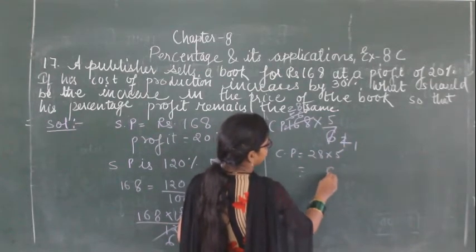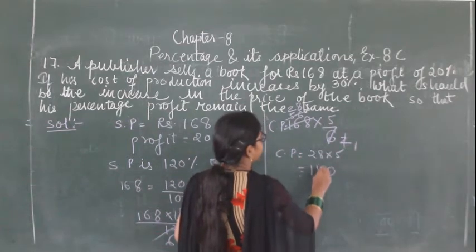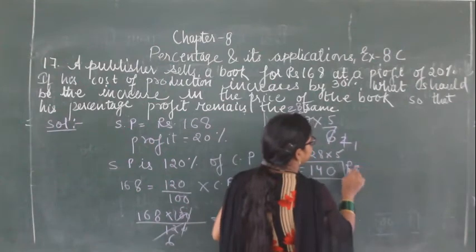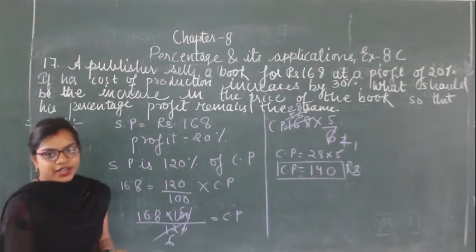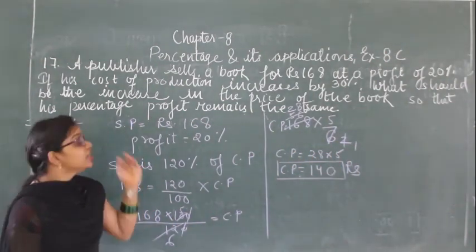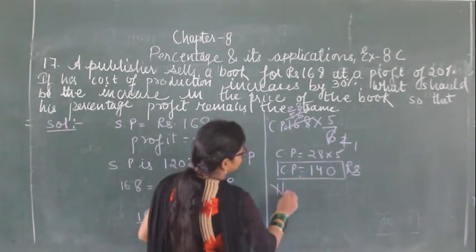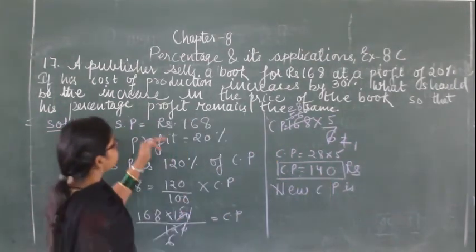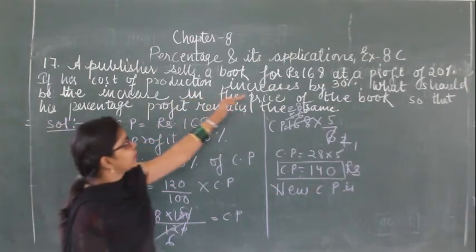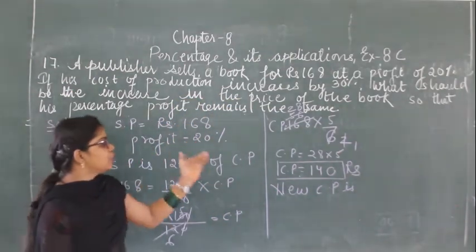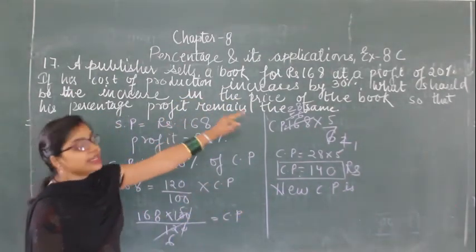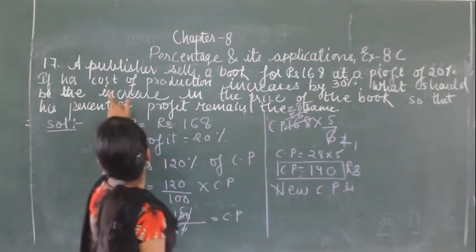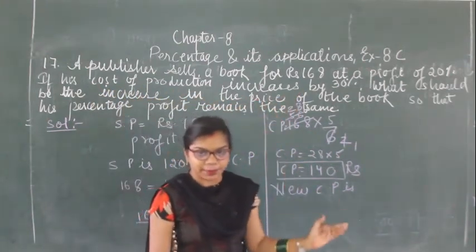So the cost price equals ₹140. Now we need to find the new cost price since production cost increases by 30%.